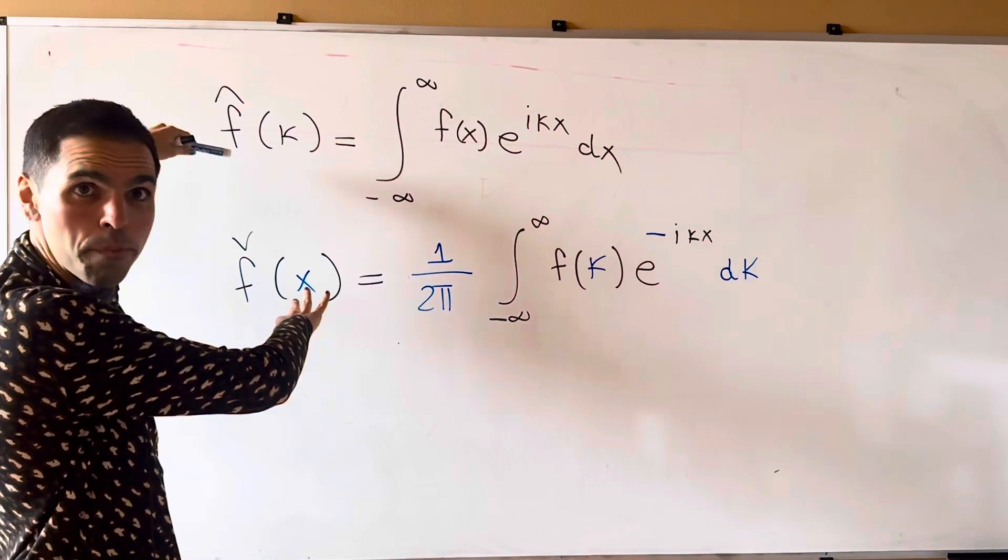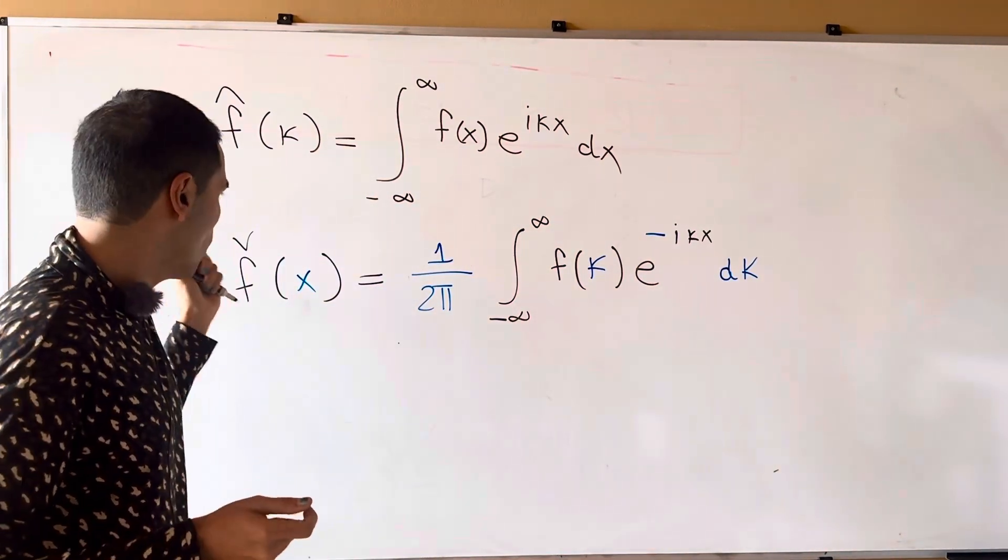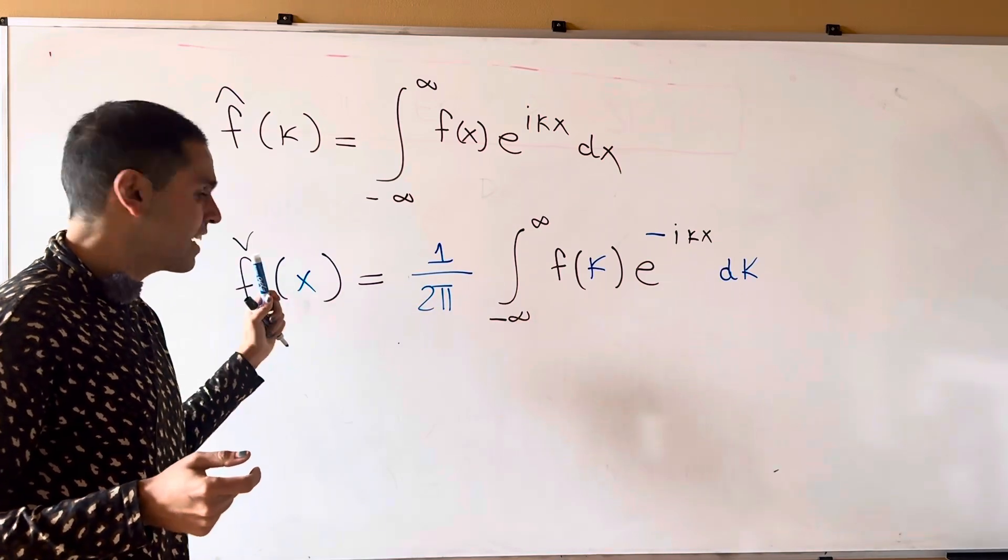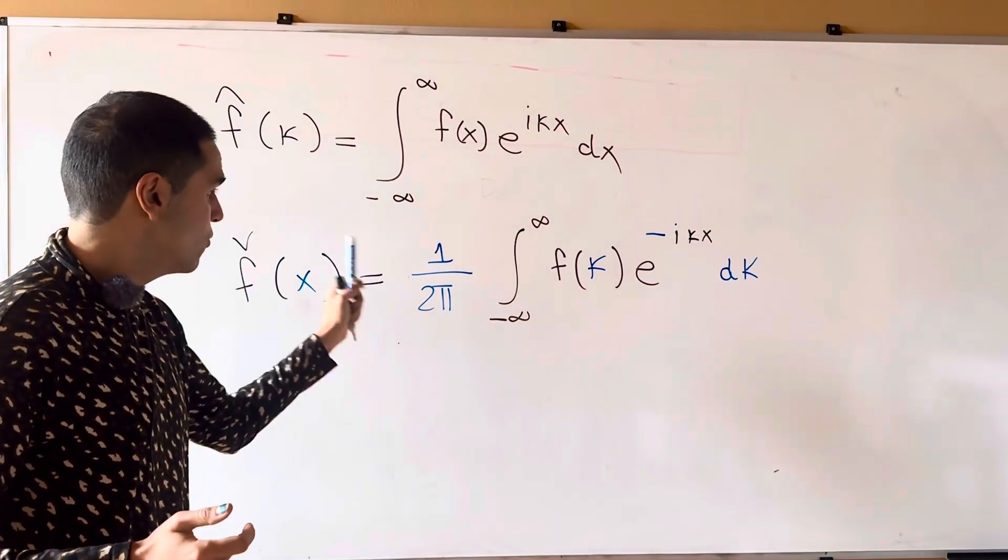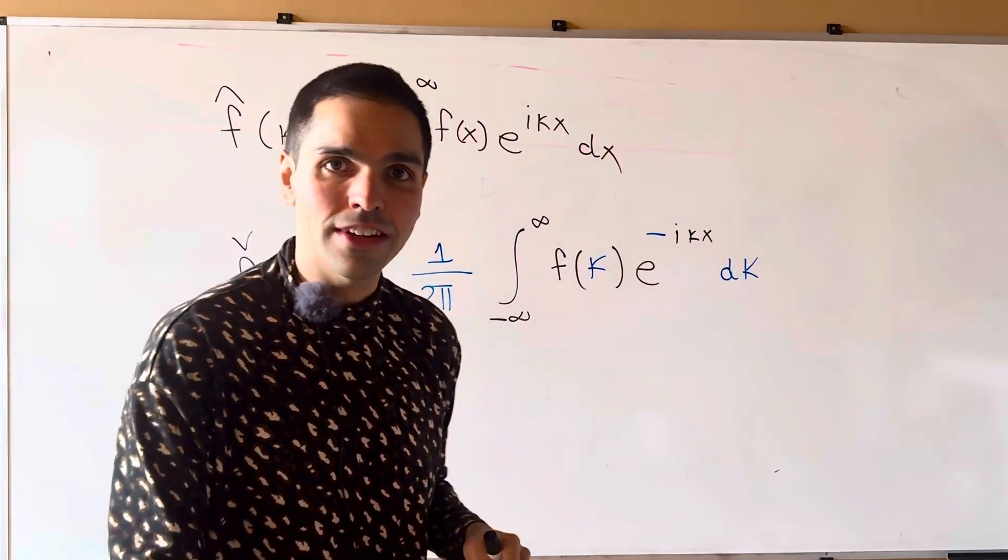So once again, compare the two definitions. They're very similar, but the main differences are f check is a function of x. We have the one over two pi, the minus, and we integrate with respect to kappa.